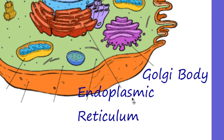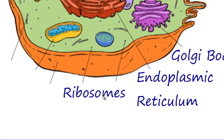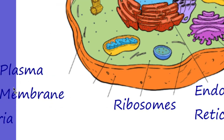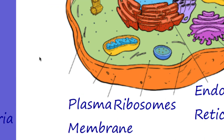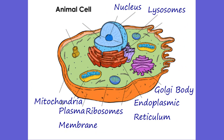We have the endoplasmic reticulum, which is right next to the nucleus. The endoplasmic reticulum carries proteins and other materials from one part of the cell to the other. We have the ribosomes — these little tiny things floating in the cytoplasm — and the ribosomes are very, very important; they're making proteins. Of course, we have the plasma membrane, which is the outside of the cell and allows for things to come in and out. And then we have the mitochondria, which is the powerhouse of the cell — that's where chemical reactions occur that power the cell in what we call cellular respiration.